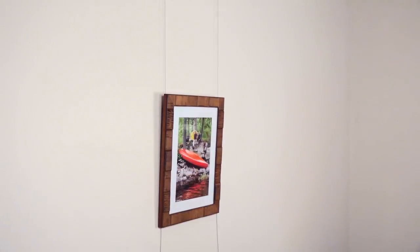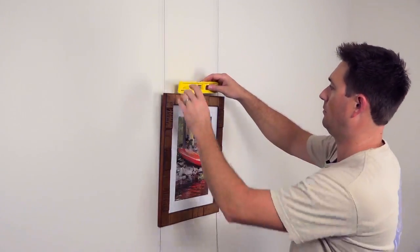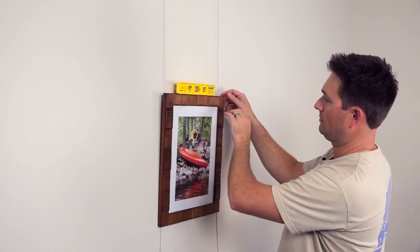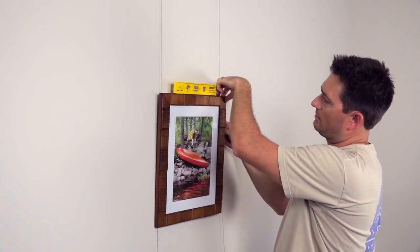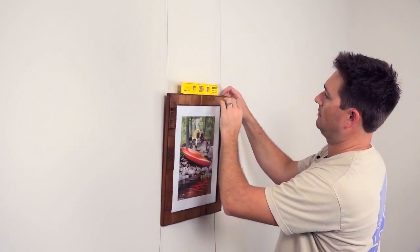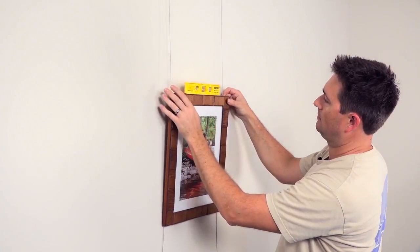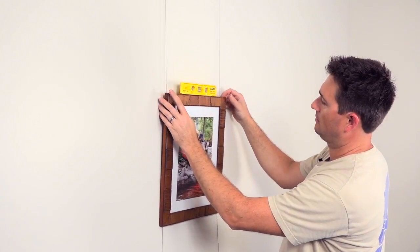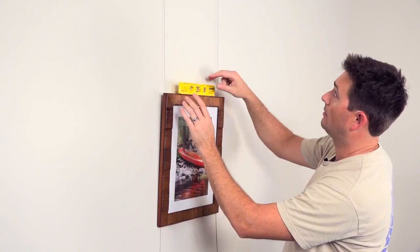So once we have it set at the height we want, we want to put a level on it to make the slight adjustments that we need. Once you have it set, you may also want to go back up to the top and move your cables back and forth so they stay parallel to each other.